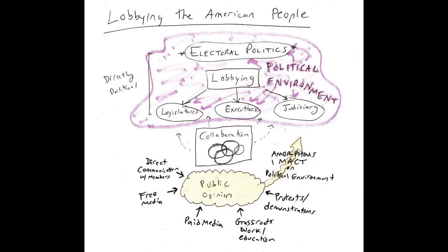In this final lecture for the week and for the course, I'm going to look at how interest groups lobby the American people. Most of this class has been spent examining the interest group struggle and interest group actions within what we could think of as capital P official political world, the directly political activities that go into achieving the goals of organized interest groups, which is to get their preferred policy outcomes enacted or, in the case of playing defense, preserved.